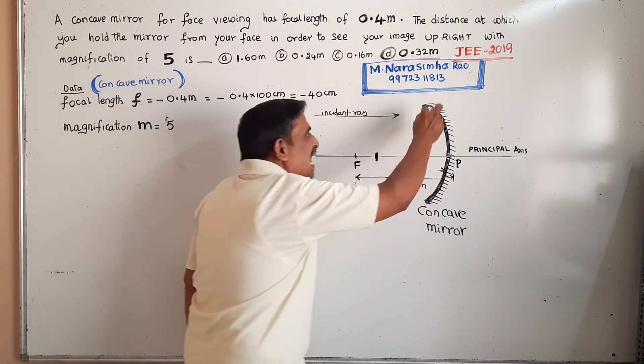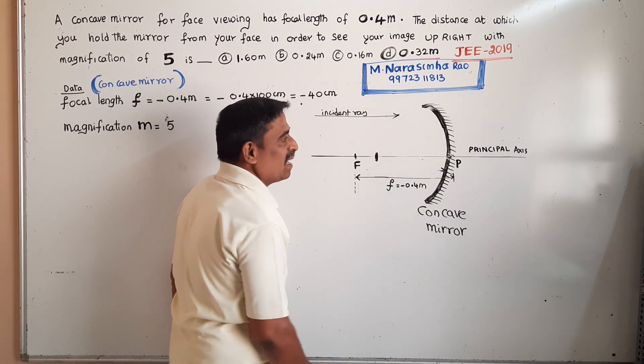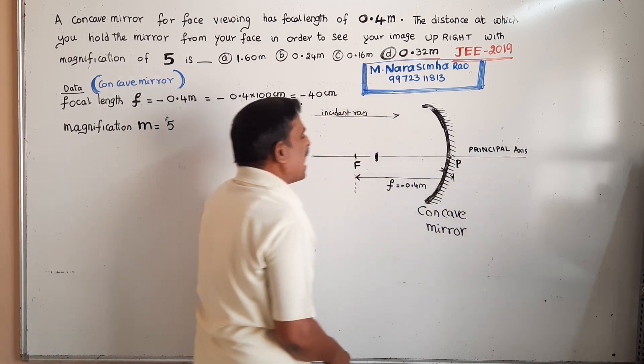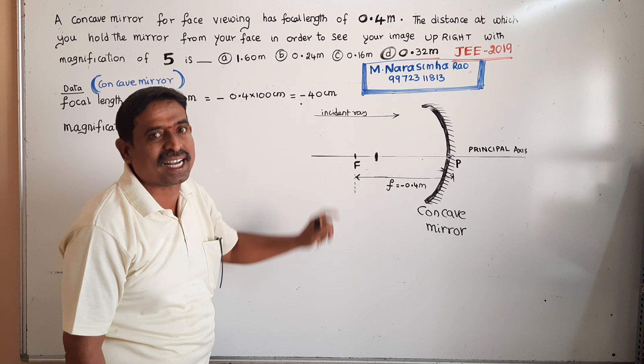In this problem, there is a concave mirror. This is the pole of the mirror, this is the principal axis, and this is the principal focus.